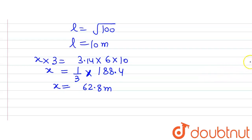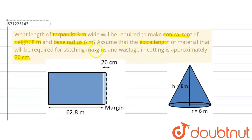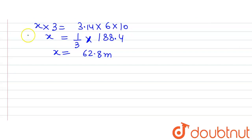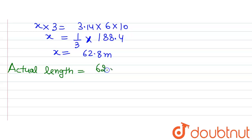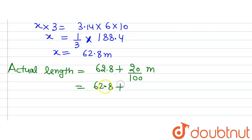So 62.8 meters is the length of the tarpaulin cloth required. But remember, we are also given stitching margins and wastage equal to 20 centimeters. Converting to meters by dividing by 100 gives 0.20 meters. So the actual length of cloth required will be 62.8 + 0.20 = 63 meters. This is the length of the cloth required to make the conical tent.